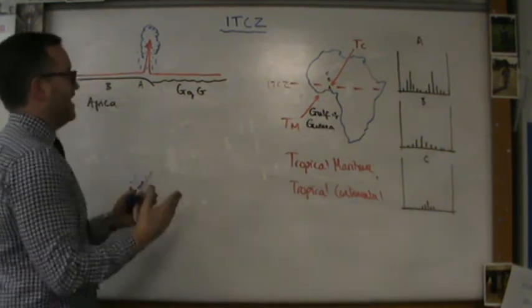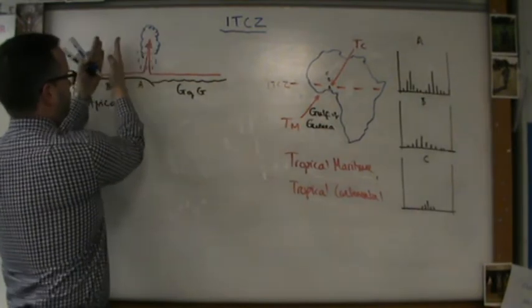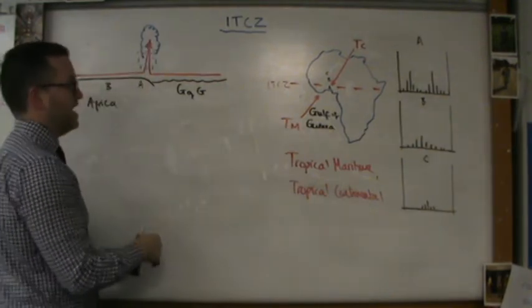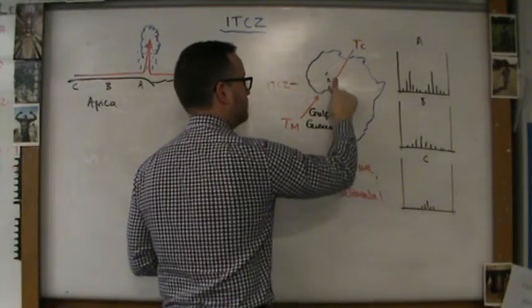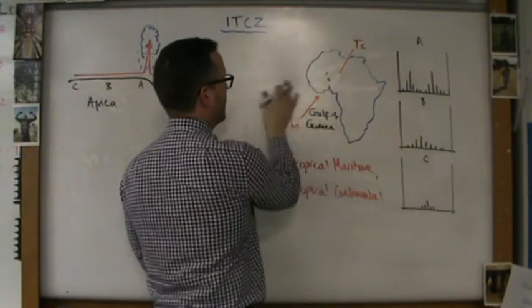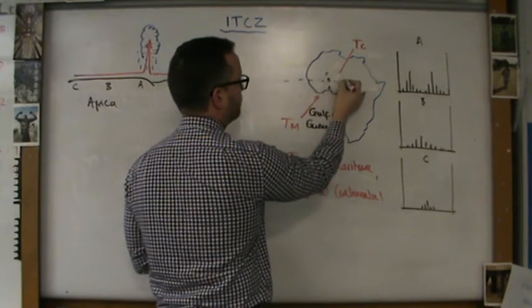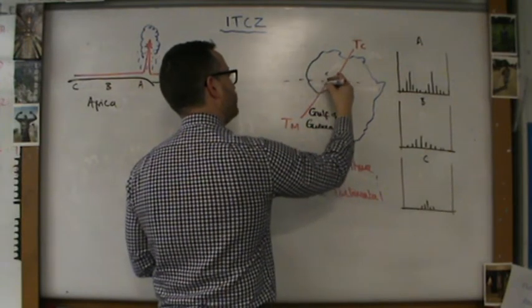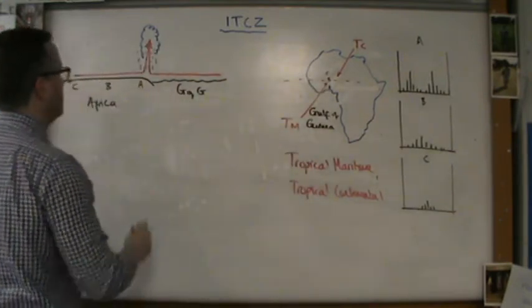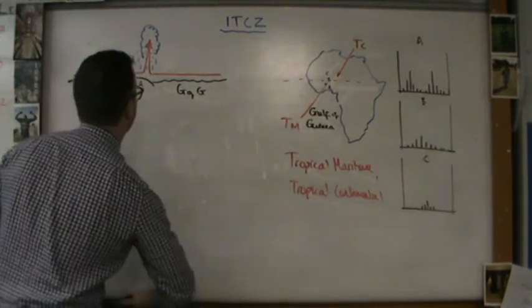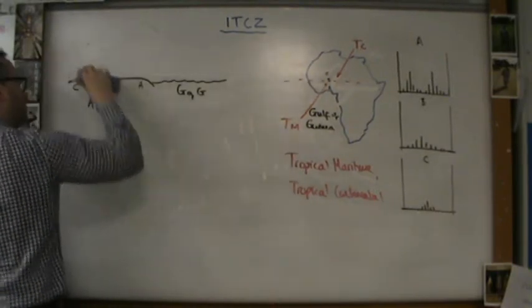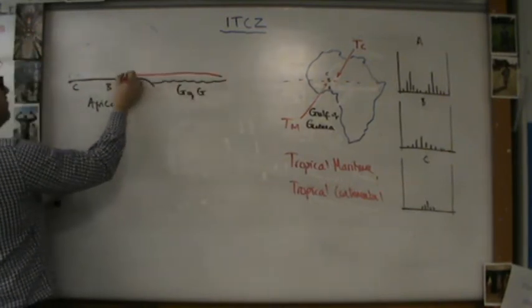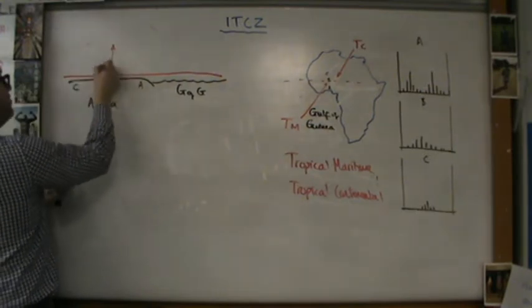However, as I said, these two air masses meet at different locations in the calendar depending what month of the year it is. So time goes by and the ITCZ moves to location B. Notice the extra journey that the TM air mass has to make. Let me show you on this diagram. Here is the TM air mass. Look how far it's got to go before it's over location B and gets forced up into the air.